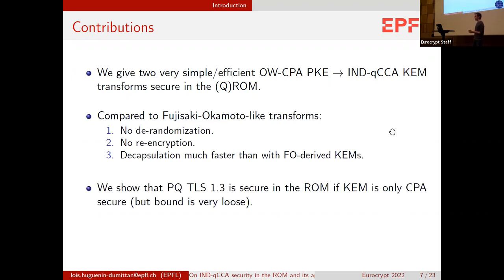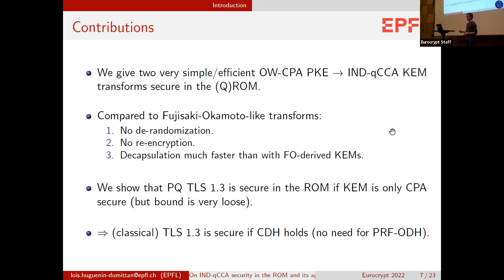Using a similar proof technique to what we use to prove the security of the second transform, we showed that post-quantum TLS 1.3 is secure in the random oracle model if the KEM is only CPA secure, which solves an open question raised in a few works. However, it's only a theoretical solution because the bound we get is very non-tight. As a corollary, classical TLS 1.3 is secure if the computational Diffie-Hellman assumption holds, without needing a fancier assumption such as PRF-ODH or strong Diffie-Hellman.